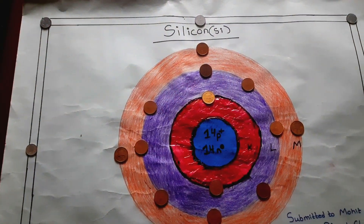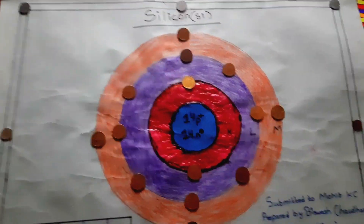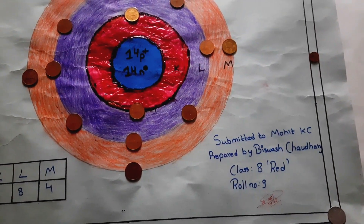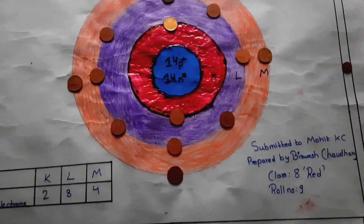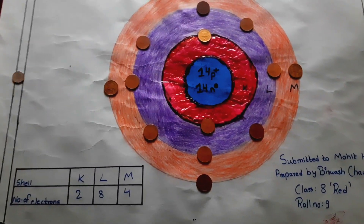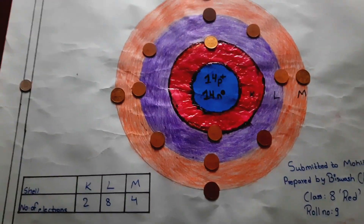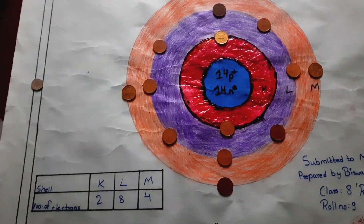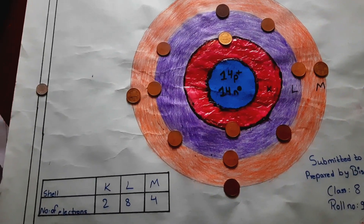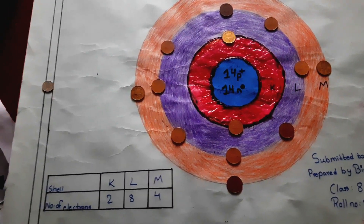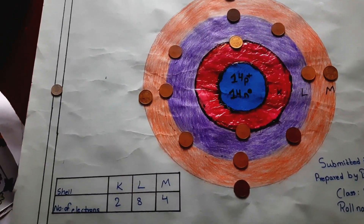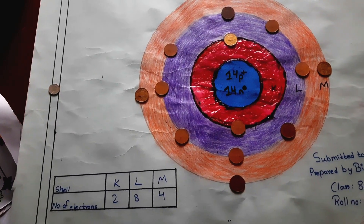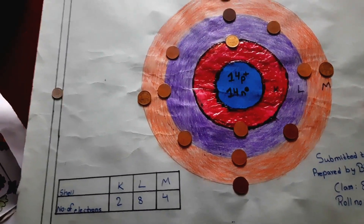This is the project work made by Biswas Soudary of class 8 Red. You can see his creativity — he has used two-rupee coins for representing the electrons.